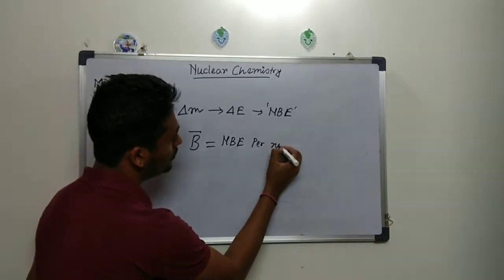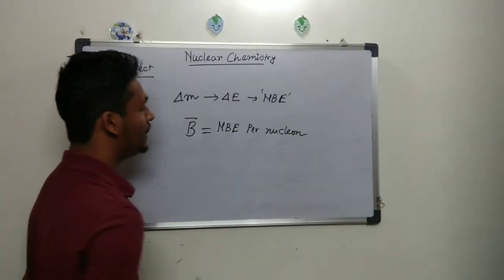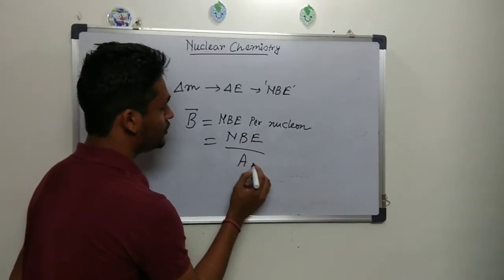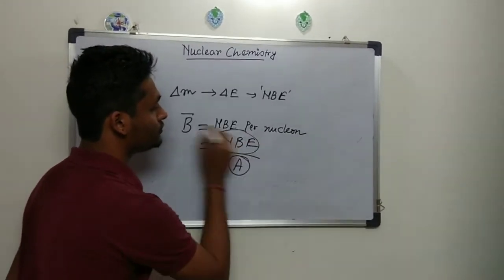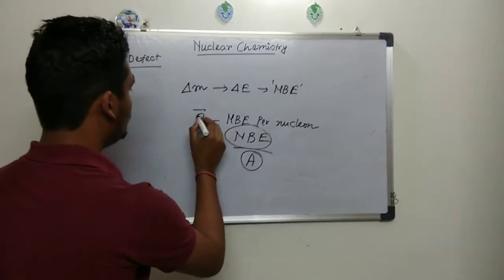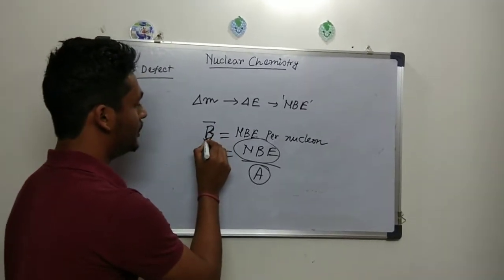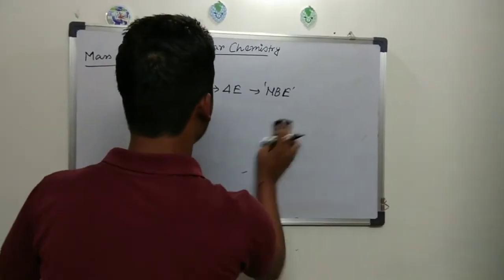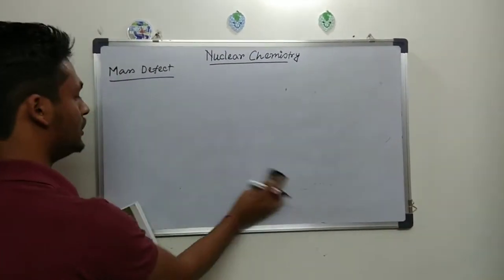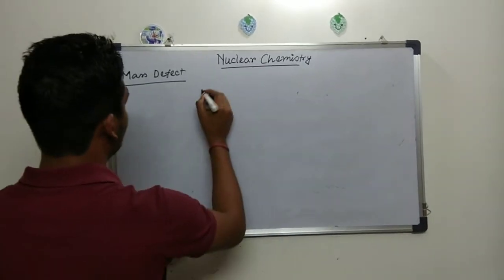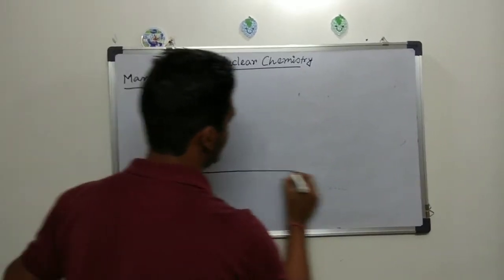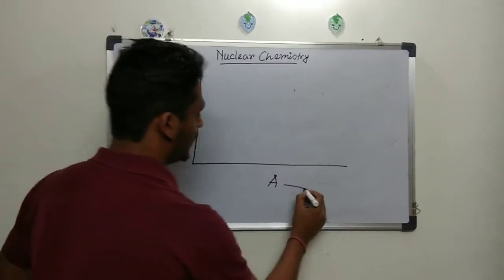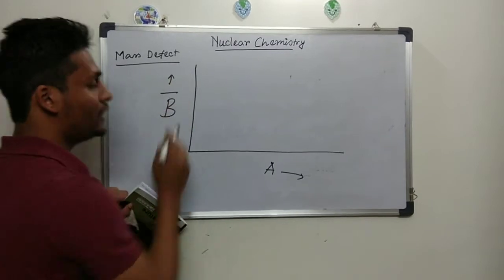There is another term called v-bar, or nuclear binding energy per nucleon. That means the total nuclear binding energy divided by the mass number A — this gives binding energy per nucleon.